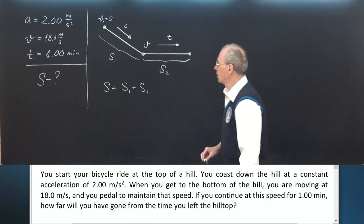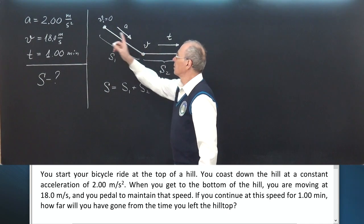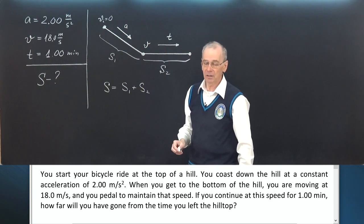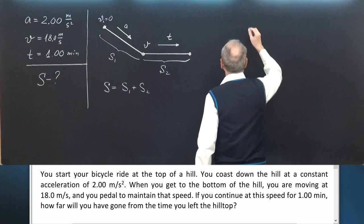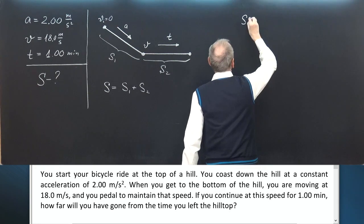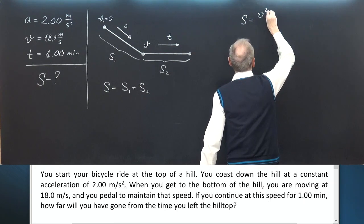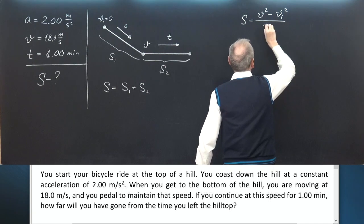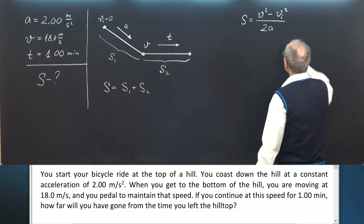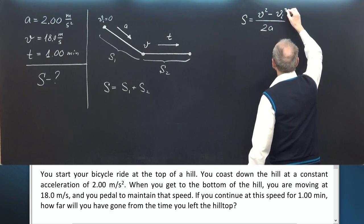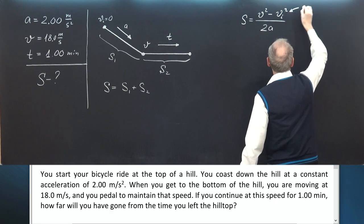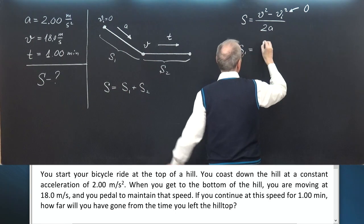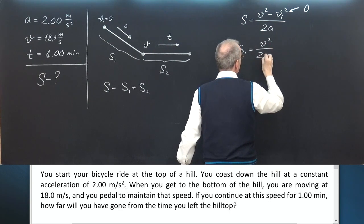For S1 we know initial velocity, final velocity, and acceleration. You can use the formula S equals V squared minus V initial squared divided by 2 times acceleration. V initial velocity equals zero. So we can write S1 is V squared over 2A.